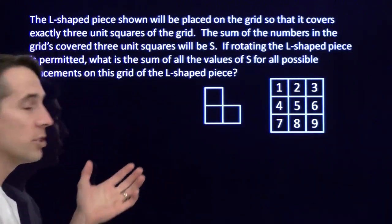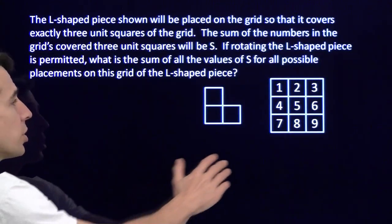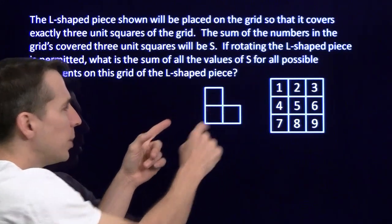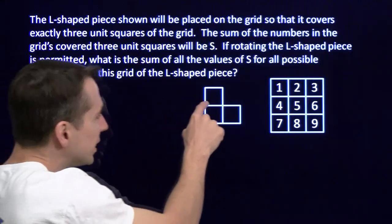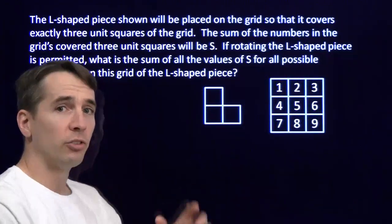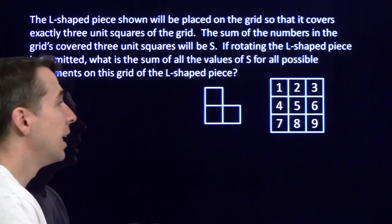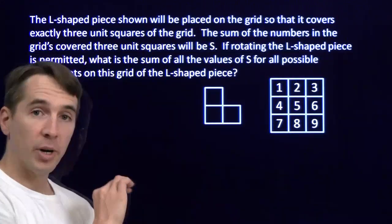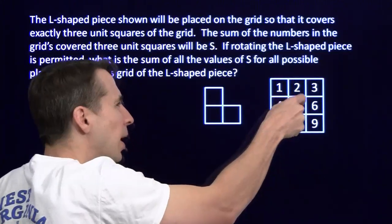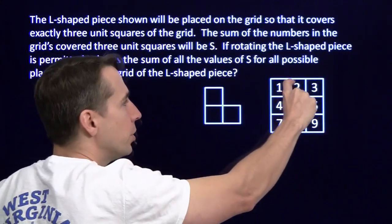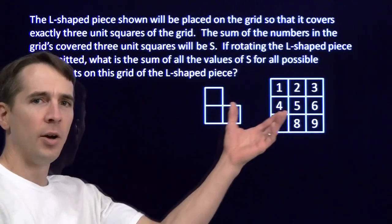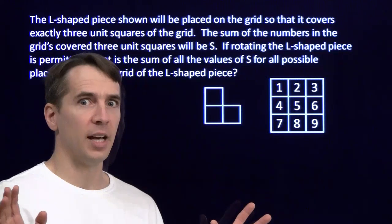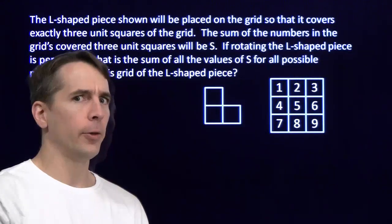I'm going to step out of the way here so you can read this. What we're doing here is we're starting with a grid of nine numbers, and we've got this little L-shaped piece. We're going to take this L-shaped piece and put it on the grid so that it covers three of the numbers. Then we're going to add the three numbers that it's covering. We're going to call that S and write that number down. And then we're going to do this with every possible way I can put this little L-shaped piece on this grid. So we're going to do it a bunch of times, get a whole lot of different values of S, and then we're going to add all those up.